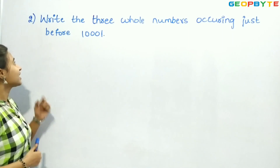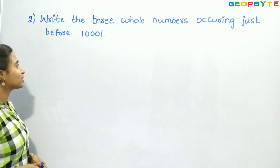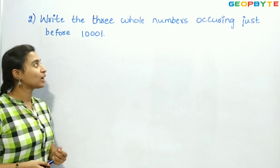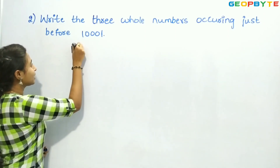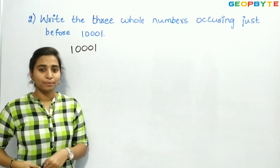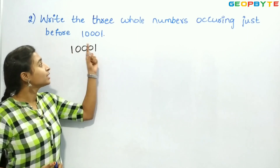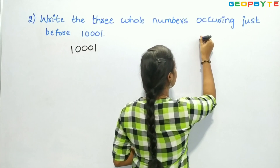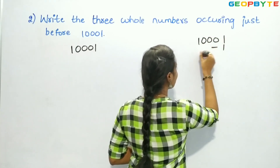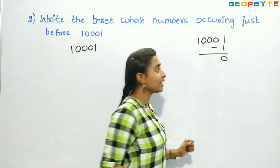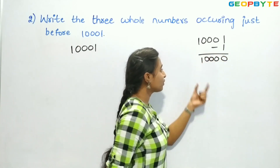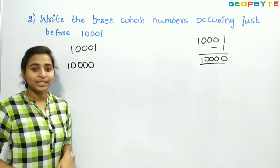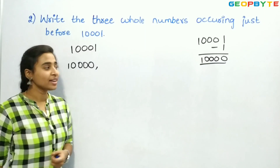Now let us see the second question: write the 3 whole numbers occurring just before 10,001. We need to write 3 numbers which occur before 10,001. In order to write previous numbers, we subtract. So first, let us subtract 1 from 10,001: 10,001 minus 1. 1 minus 1 is 0, and we have 3 zeros and 1, giving us 10,000. So the first before-number is 10,000.